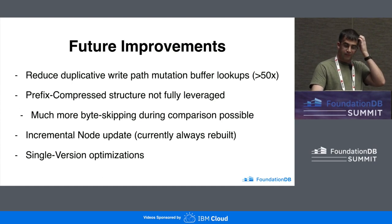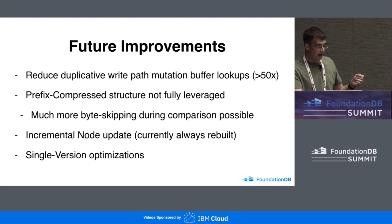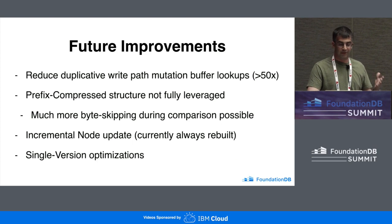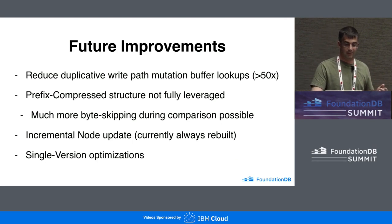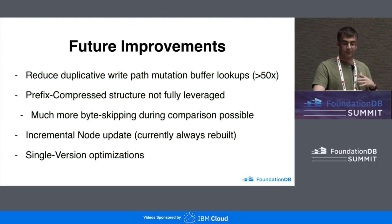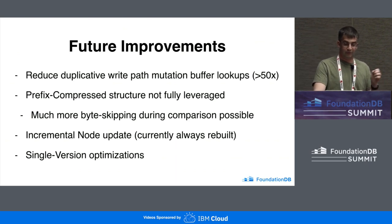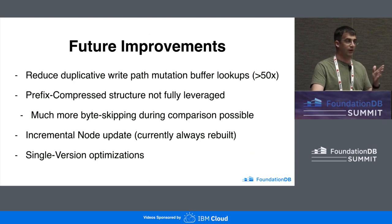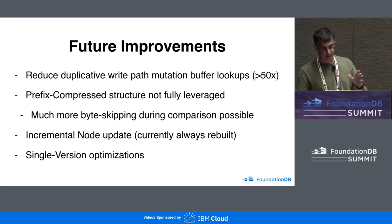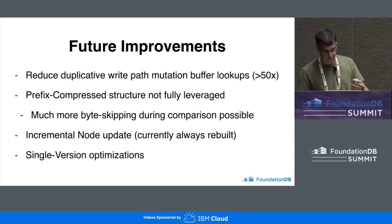Also, the prefix compressed structure of the nodes and the overall tree is not being fully leveraged — there's a lot more byte skipping that could be done during comparisons. Nodes themselves are currently always rebuilt by taking all the old data and the new data together; for small edits, nodes could be surgically updated, which would be a lot faster for highly random small writes. There are also some single-version optimizations that could be done for when you know you don't need any version history.